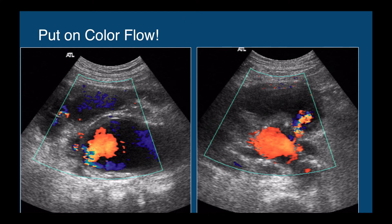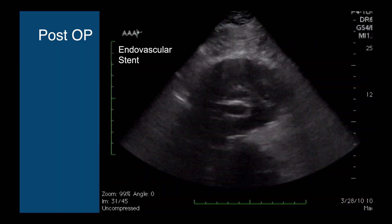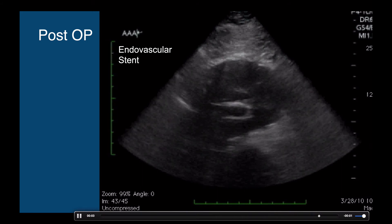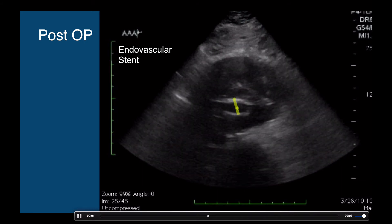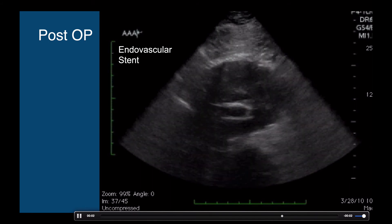If we happen to see an aneurysm, the first thing to do is put some color flow on it — after you call the vascular surgeon — because you want to know if there is active extravasation or not. In this case you can clearly see that there is. That makes the call even more urgent for the vascular surgeon to arrive in time to place an endovascular stent and repair the aorta before the patient dies.